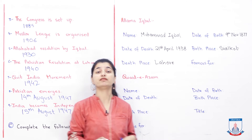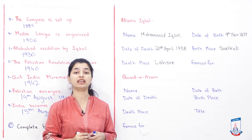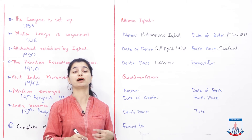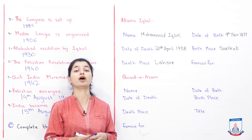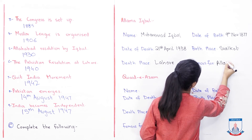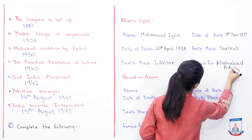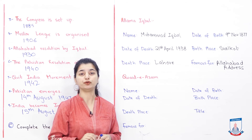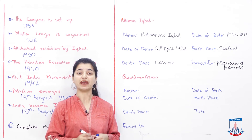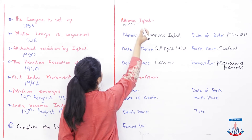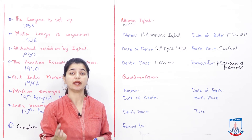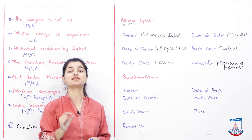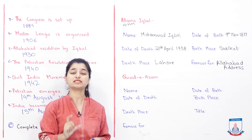What was Allama Iqbal famous for? He was famous for several reasons. He was knighted by the British. He is very famous for his Allahabad address and for his poetry, which revived and encouraged the young Muslim community. You can mention the Allahabad address and add more examples if you want to write a longer answer. His title was Allama itself — Allama means 'great scholar'. Another title was 'Sir', because the British knighted him. So he was also known as Sir Allama Iqbal — you can write both of these titles.